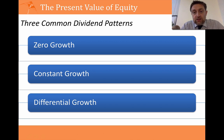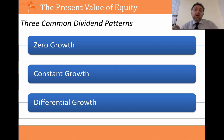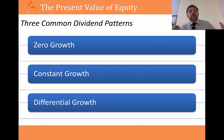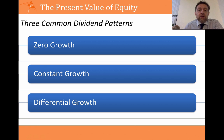The third case — found in small companies, companies going through a very high growth period, or companies with an R&D product appearing in a few years — involves two different periods of growth. You might have very high growth for a short period followed by a more sustainable growth rate, or alternatively very low growth followed by a sustainable growth rate, which could apply to a research and development company. So we're looking at three different scenarios.